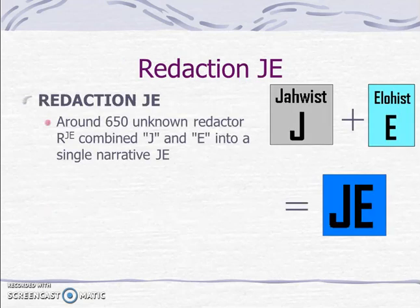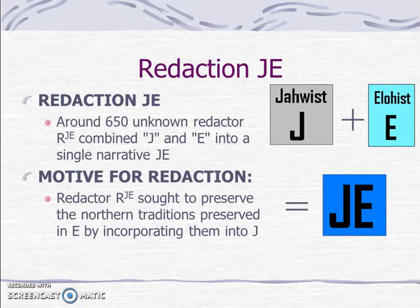Then a redactor — that is, an editor — comes along and combines J and E into a single narrative, J.E. This was done, according to Wellhausen, roughly around 650 B.C. The motive for the redaction was that Redactor J.E. sought to preserve the Northern traditions, preserved by E, and incorporate them into the Southern tradition, preserved by J.